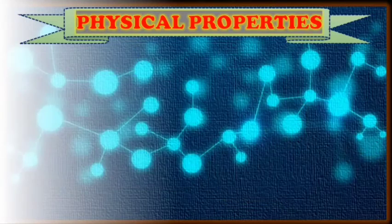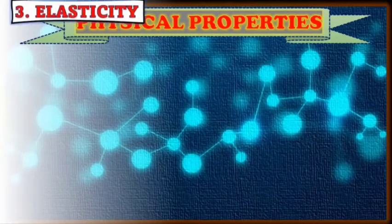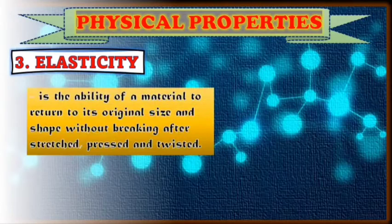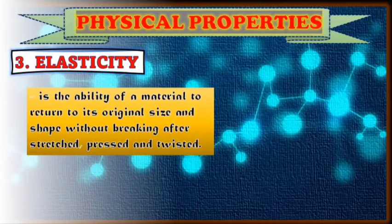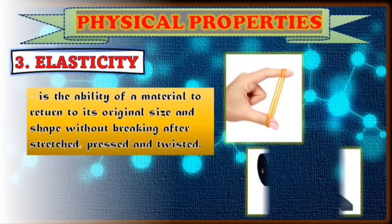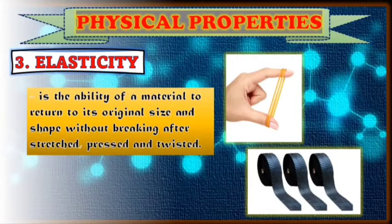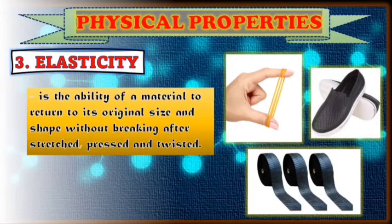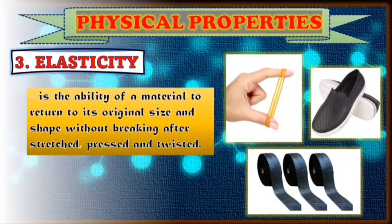Number three physical property of material is what you call elasticity. It's the ability of a material to return to its original size and shape without breaking after being stretched, pressed, and twisted. Just like rubber is an elastic material that is used for making rubber bands, rubber belts of some machines, rubber shoes, and stretchable bags. That is what you call elasticity.